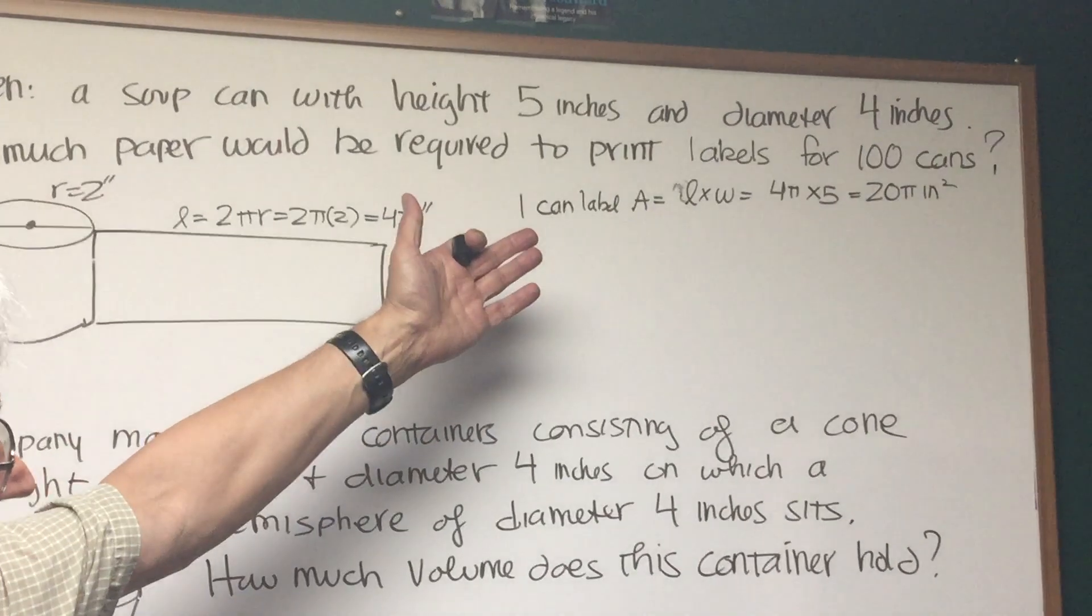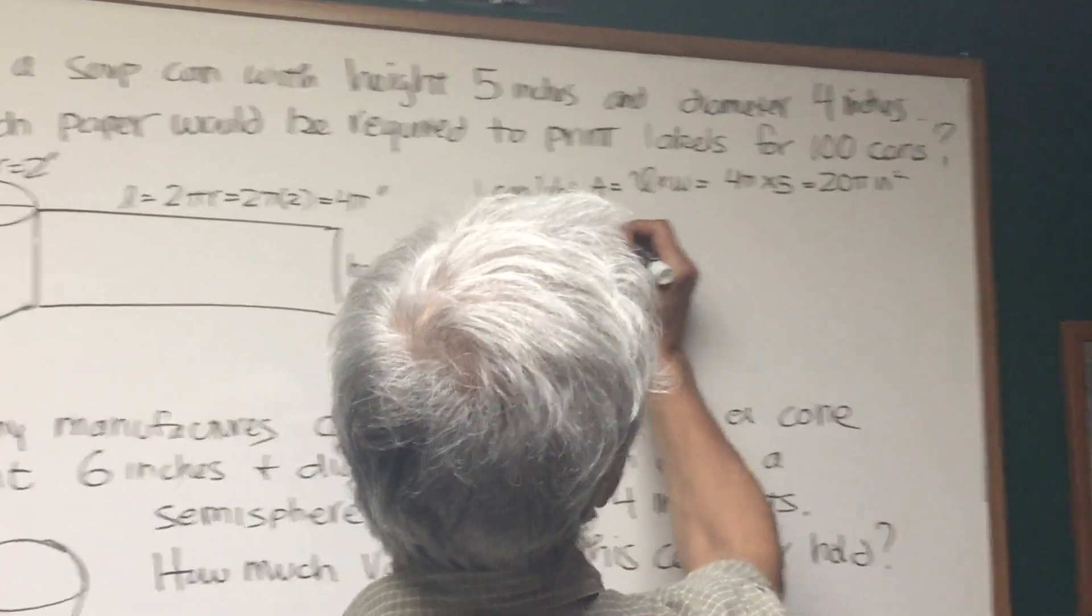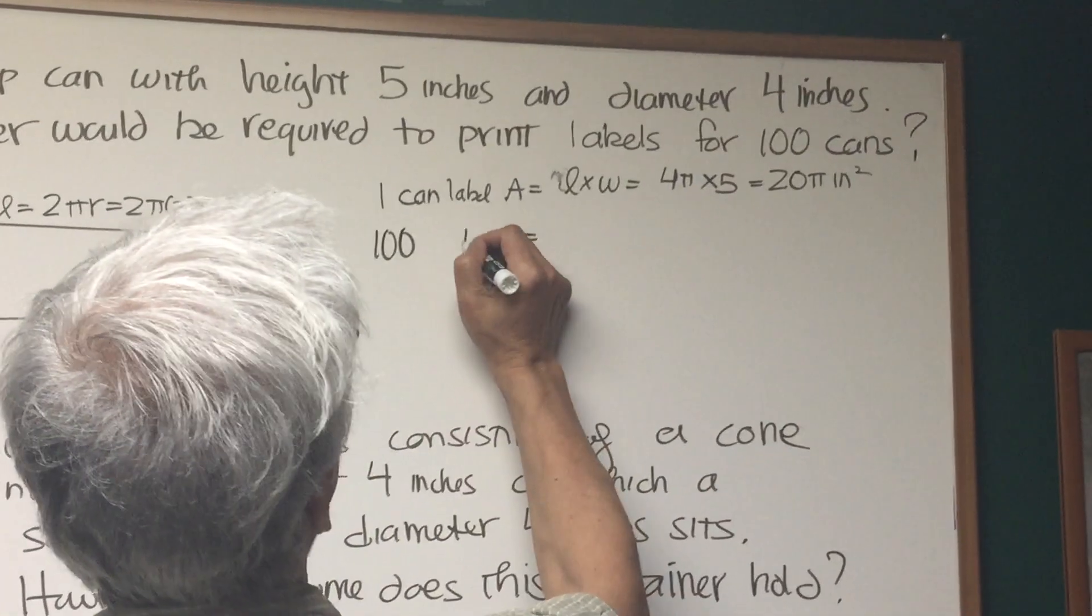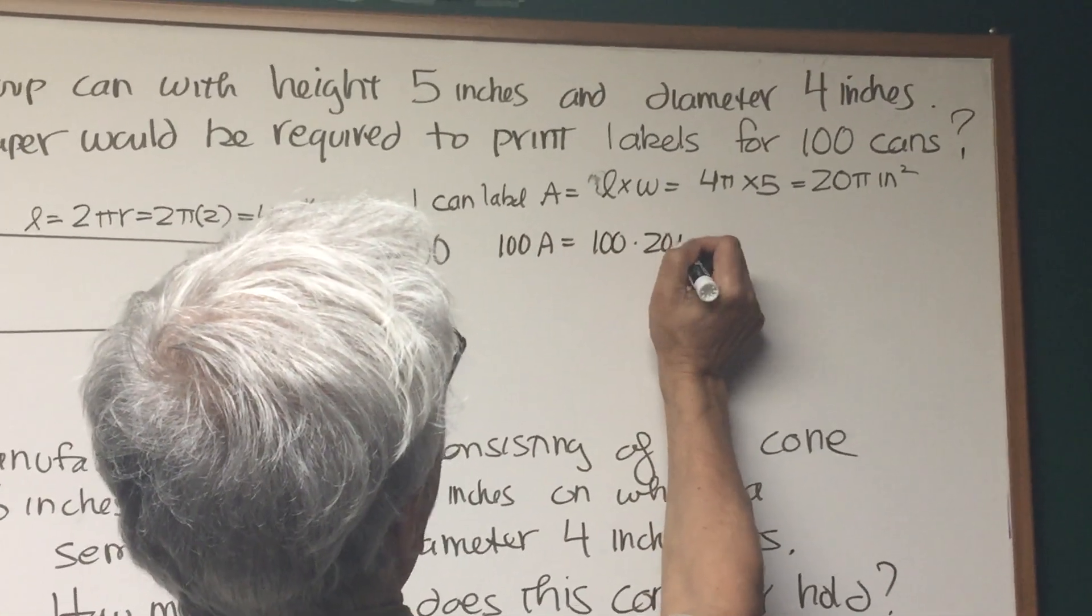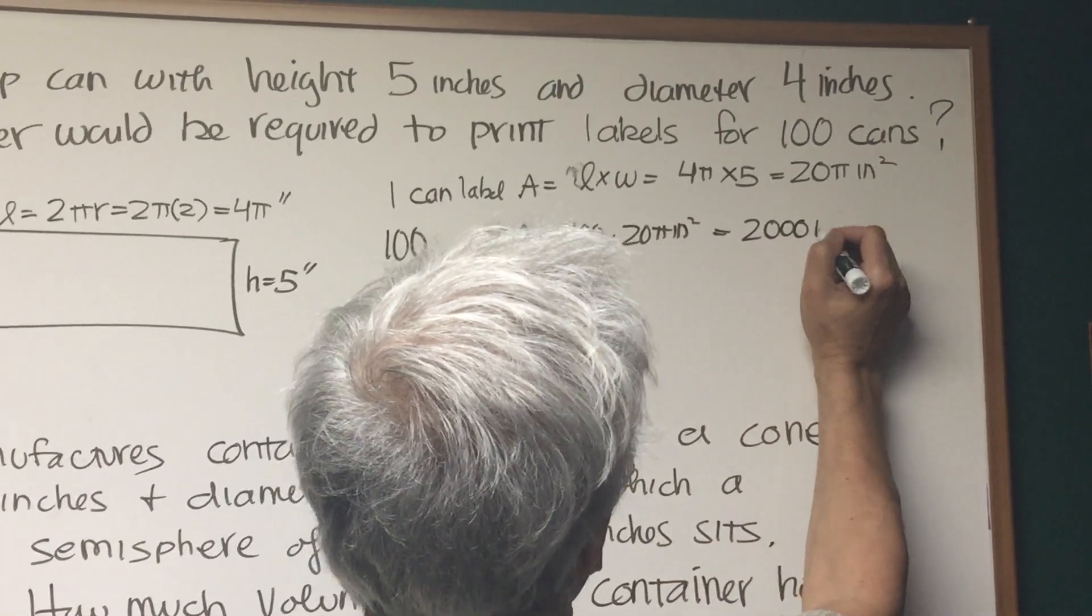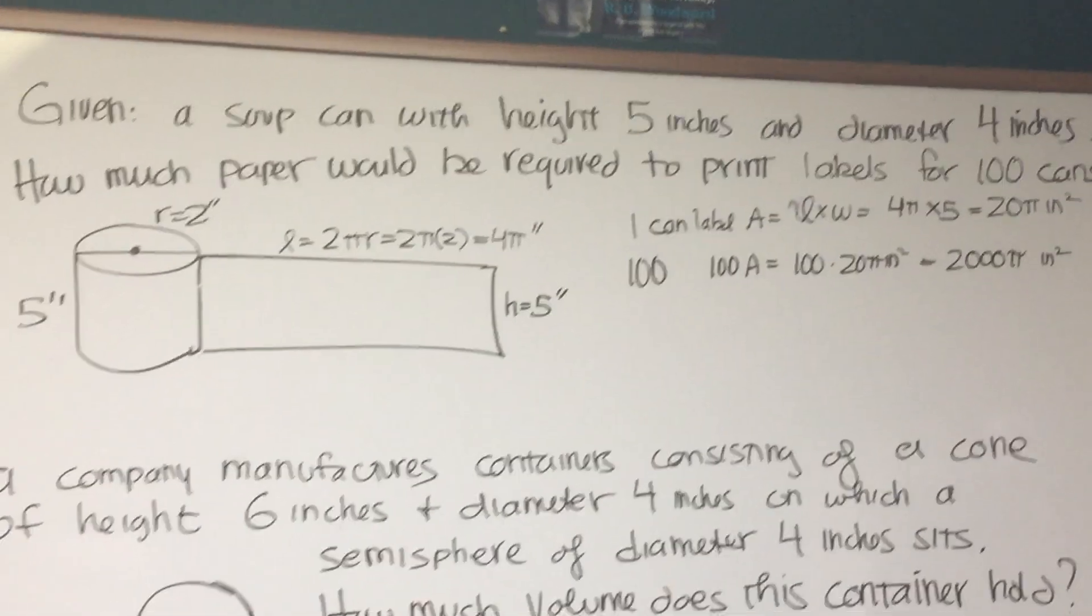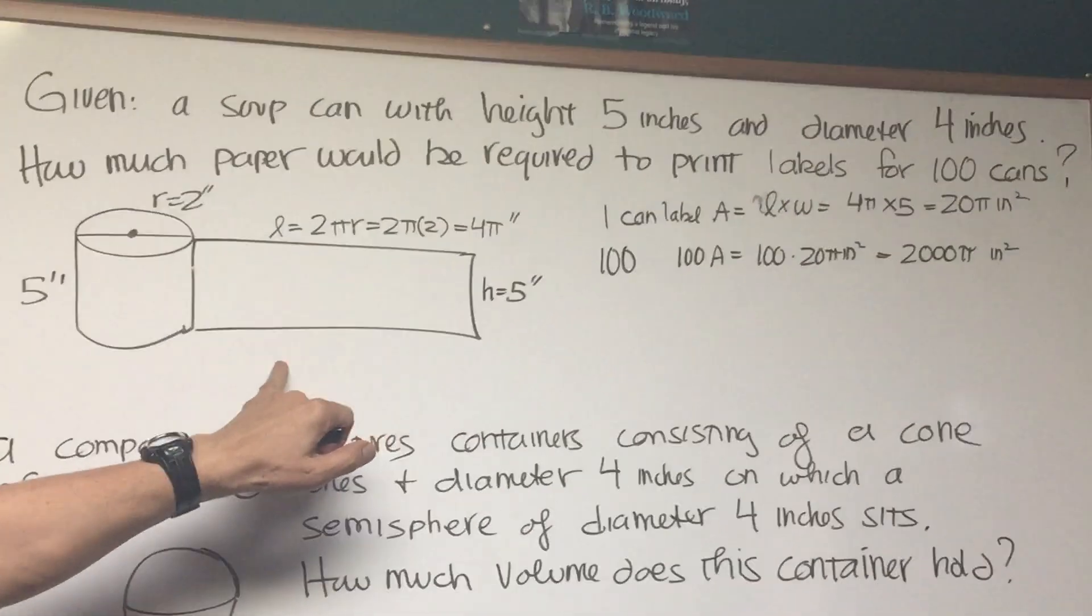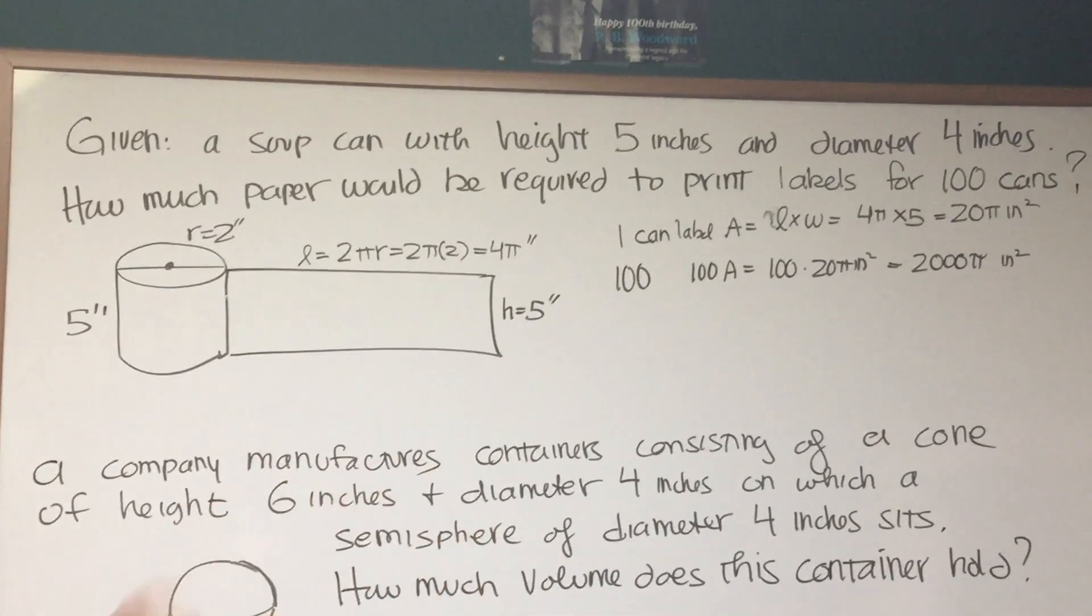So what? We want labels for 100 cans? Okay, so 100 labels, the area is going to be 100 times that, it's going to be 100 times 20π inches squared, and that's going to be 2000π inches squared. And there's our answer right there. Okay, so that's good to know how to find the area of a label on a soup can.